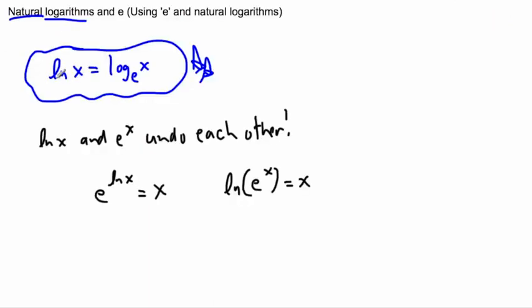So the first one is how we actually define natural log - it's just log base E. And the key other thing is natural logs and E to the X, they undo each other.